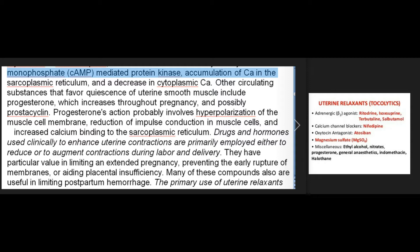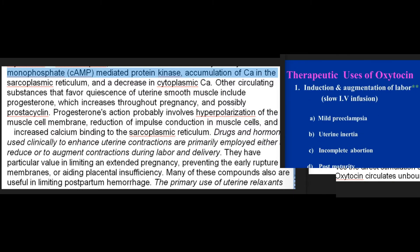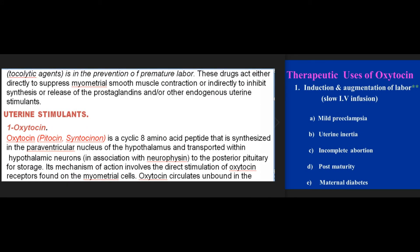Drugs and hormones used clinically to enhance uterine contractions are primarily employed either to reduce or augment contractions during labor and delivery. They have particular value in limiting extended pregnancy, preventing early rupture of membranes, or aiding placental insufficiency. Many of these compounds also are useful in limiting postpartum hemorrhage. The primary use of uterine relaxants — tocolytic agents — is in the prevention of premature labor. These drugs act either directly to suppress myometrial smooth muscle contraction, or indirectly to inhibit synthesis or release of prostaglandins and/or other endogenous uterine stimulants.